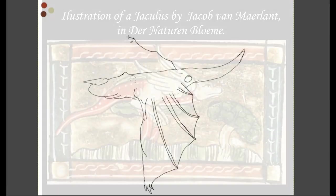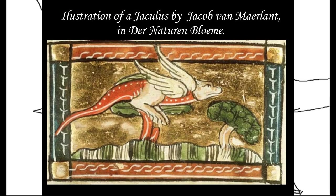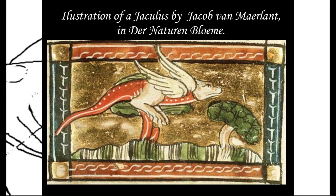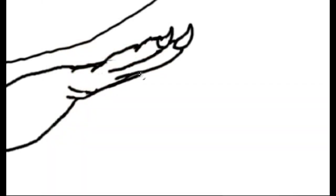Today we will be looking at the Iaculus, a small dragon-like creature from Greek and medieval legends, famous for jumping off trees and impaling whoever was passing by like a living scaly javelin.